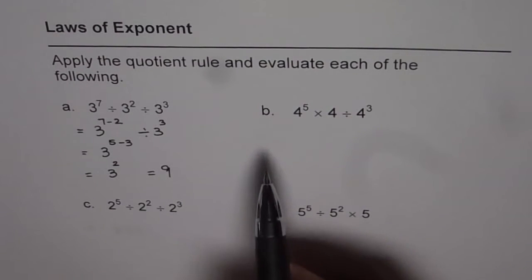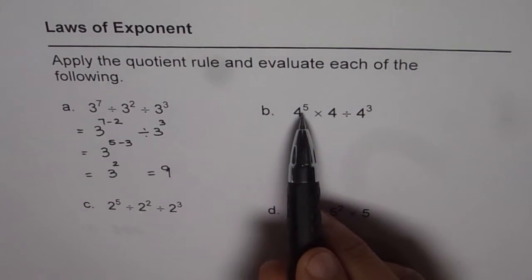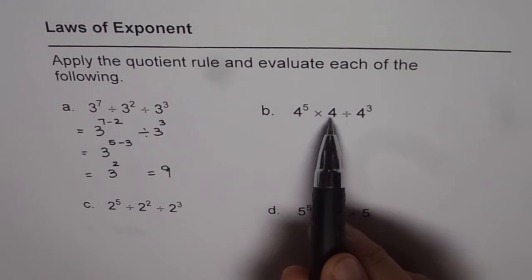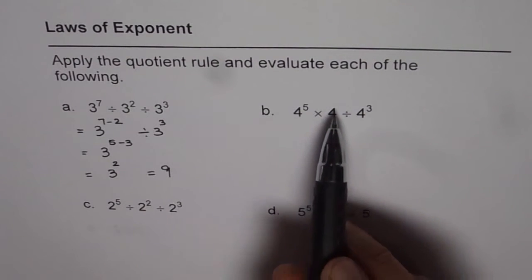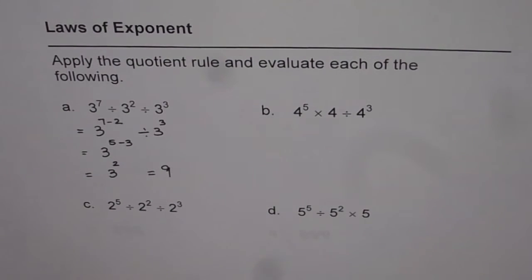Now let's do part B which is 4 to the power of 5 times 4 divided by 4 cube. Now if power is not mentioned, it is always 1. 4 to the power of 1.